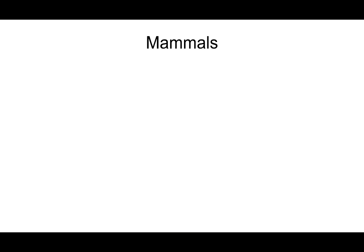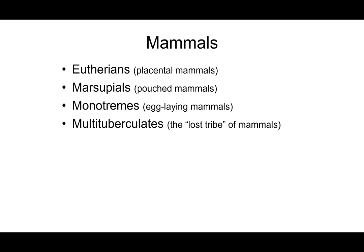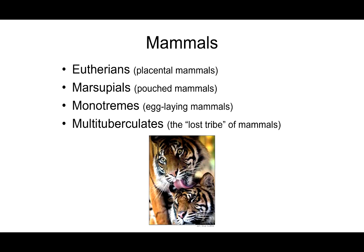Mammals! There are four major groups of mammals: the eutherians, the marsupials, monotremes, and the multi-tuberculates. The eutherians are the placental mammals — us, for example, and all other mammals that have internal gestation.